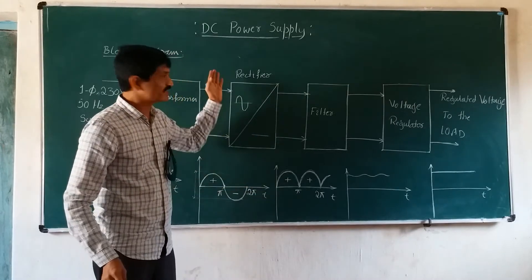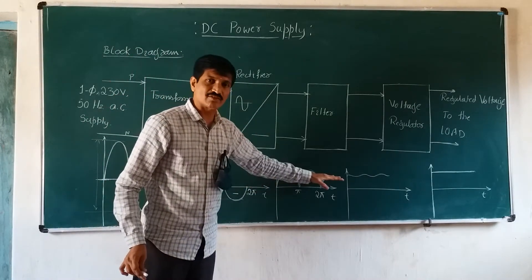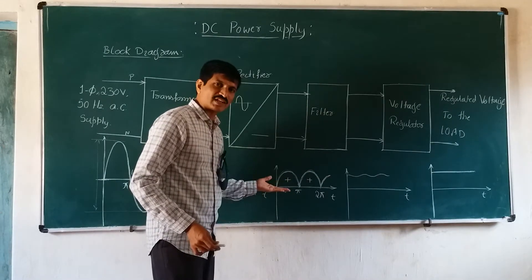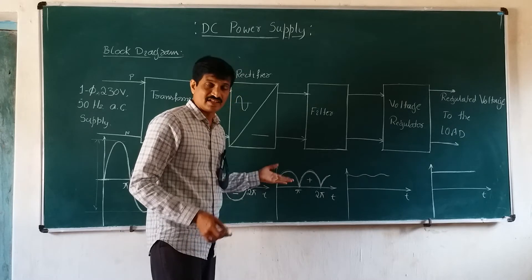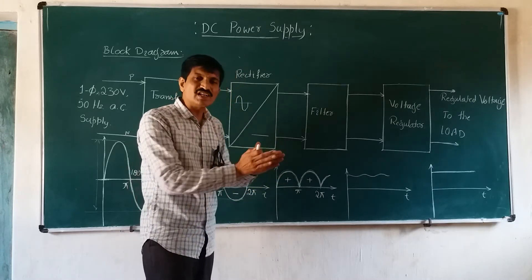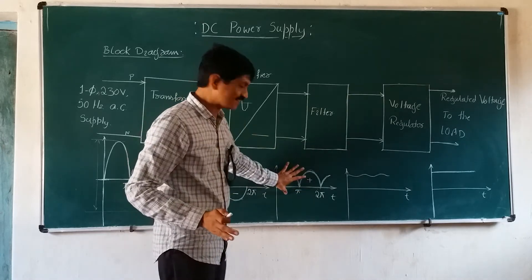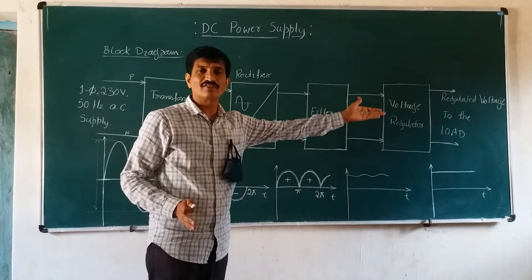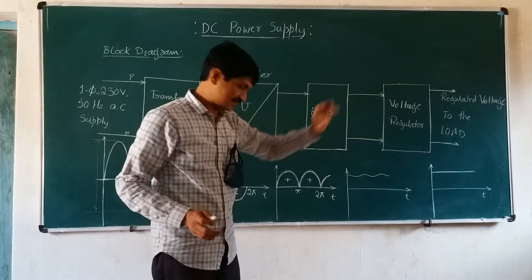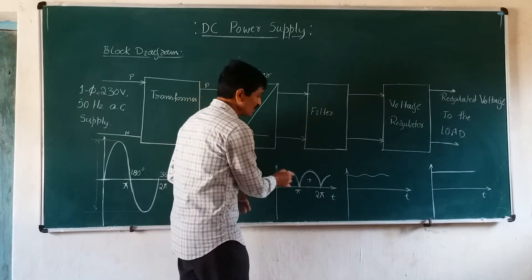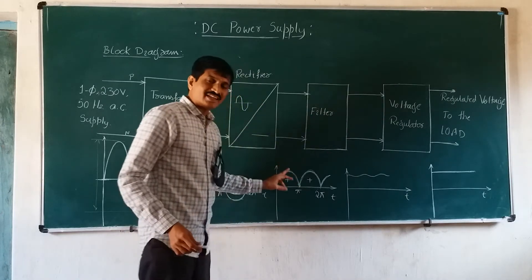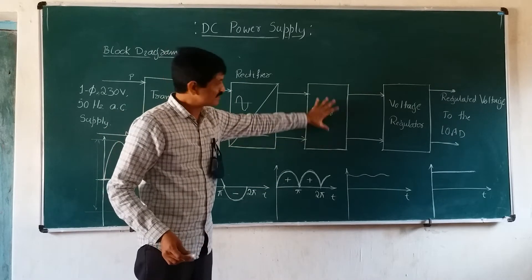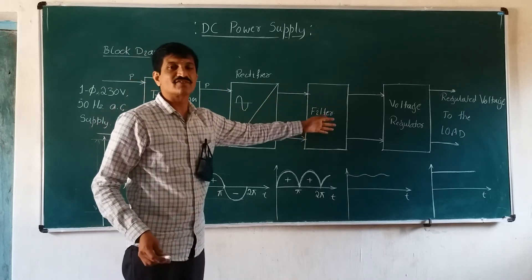The pulsating DC is not the required output from this DC power supply — we need a constant voltage level. This pulsating DC is a mixture of DC characteristics as well as AC pulsations. These AC characteristics need to be filtered off and removed from the output so that we get the required constant DC voltage and current. To remove the unwanted AC characteristics from the rectified output, we go through the filtration process. The next block after the rectifier is the filter.